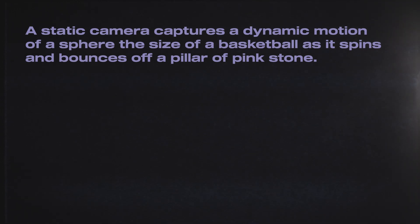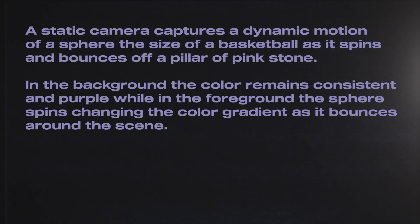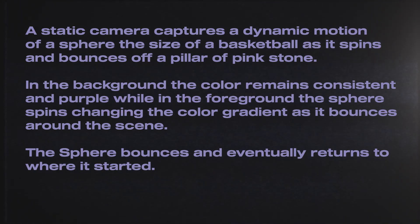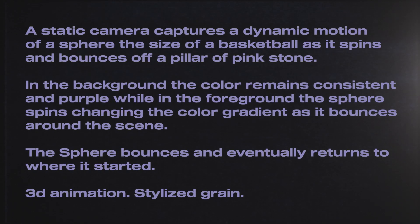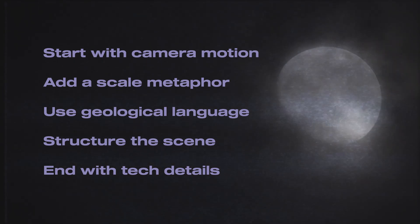For this animation, the prompt is: a static camera captures a dynamic motion of a sphere the size of a basketball as it spins and bounces off a pillar of pink stone. In the background, the color remains consistent and purple. While in the foreground, the sphere spins, changing the color gradient as it bounces around the scene. The sphere bounces and eventually returns to where it started. 3D animation, stylized grain. That's the Mary formula. The better you prompt, the more cinematic the output.